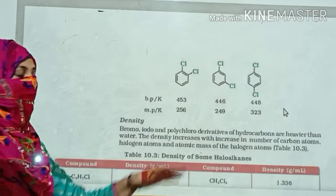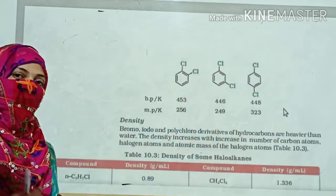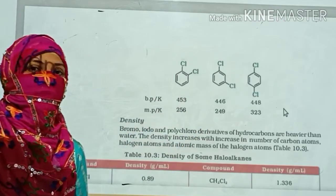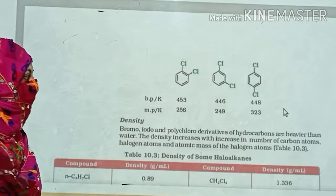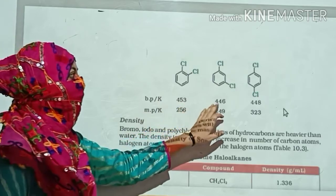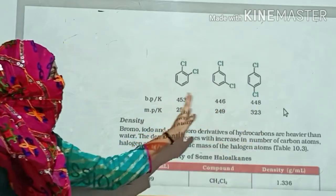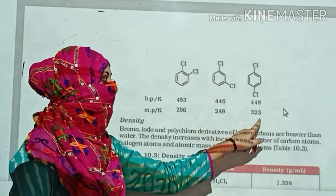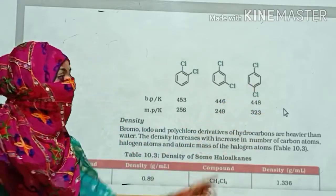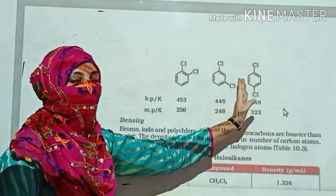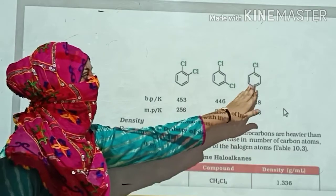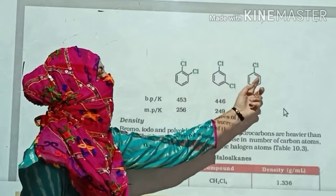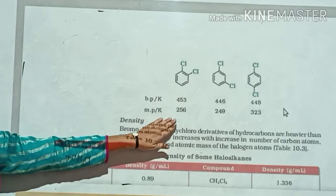Again, you have different structures — ortho, meta, and para — and because the position of the Cl is different, there is different symmetry. Because of different symmetry, there is a change in the boiling point and melting point. The boiling points are 453, 446, and 448 respectively, and the melting points are 256, 249, and 323. The para isomer is symmetrical — when you draw a straight line, one part is the mirror image of the other — while the ortho and meta are unsymmetrical, which accounts for the difference.